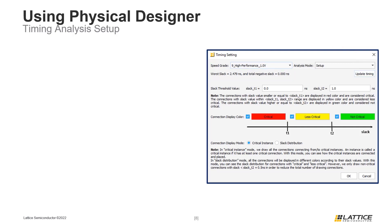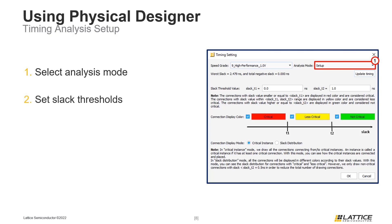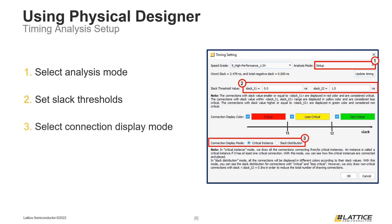To configure the settings for timing analysis, the first step is to select the analysis mode. From the analysis mode drop-down at the top of the window, either setup or hold timing analysis can be selected to determine the type of timing analysis being performed. Next, the slack threshold should be configured. These values determine which paths and instances in a design are considered critical, less critical, or not critical. The worst slack estimation can be used to obtain a good estimate for how to configure these slack threshold values. Once the timing thresholds are set, the final step is to select the connection display mode, which controls how congestion view works once a timing analysis is configured. Once the timing analysis has been configured, click the OK button to confirm the timing analysis settings.